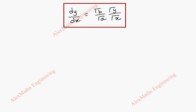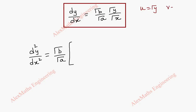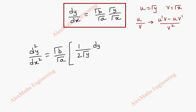For the second differentiation, d²y/dx², we keep the constant root b by root a separately and apply the quotient rule on root y by root x, where u is root y and v is root x. Following u prime v minus u v prime over v squared: u prime is 1 by 2 root y by chain rule into dy by dx, v is root x, minus u which is root y, and v prime is 1 by 2 root x.